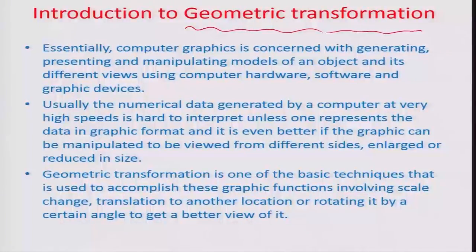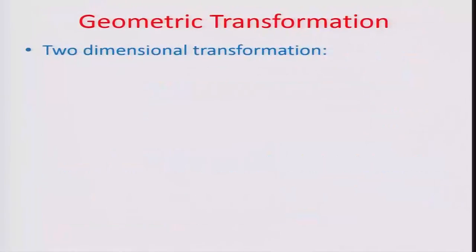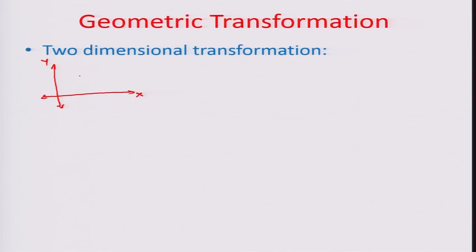When talking about geometric transformations, the first thing that comes to mind is a two-dimensional transformation. Let us say we have just a small point in space in an x, y plane, at a certain distance equal to radius vector r from the origin O. The point has coordinates x and y.